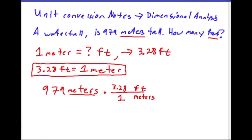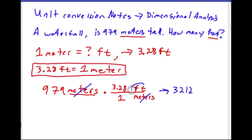Looking at the problem, I see meters times feet over meters, so meters cancel out. Multiplying through: 979 times 3.28 gives me around 3,212, and the remaining unit is feet. That was our first problem — as you can see, it's not too bad.